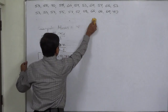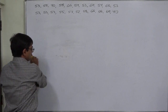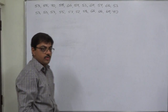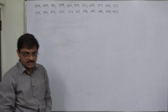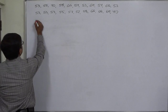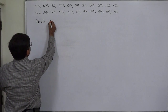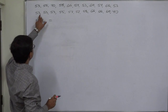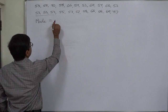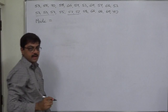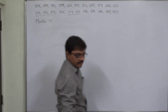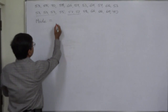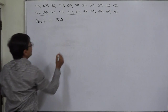Now for this data, we are going to determine the mode. The data value which repeats itself the most number of times is known as the mode. In this data, 53 repeats itself three times and 57 repeats itself two times. Out of 53 and 57, 53 appears three times — the most in the entire data. So we can say that the mode of this particular data is 53.